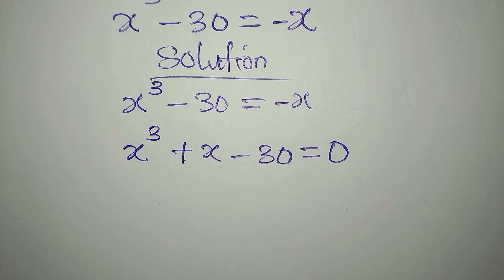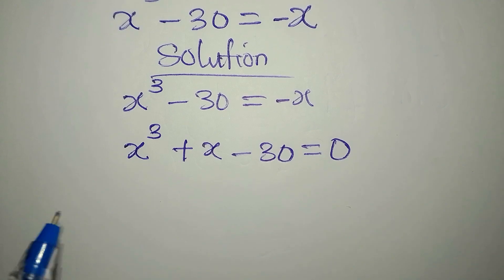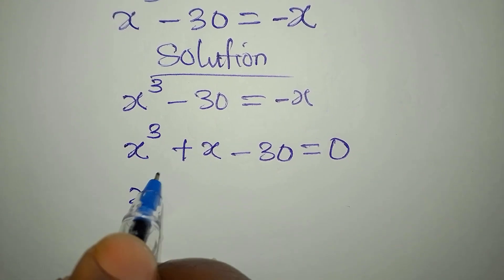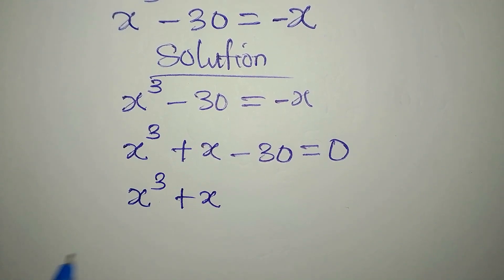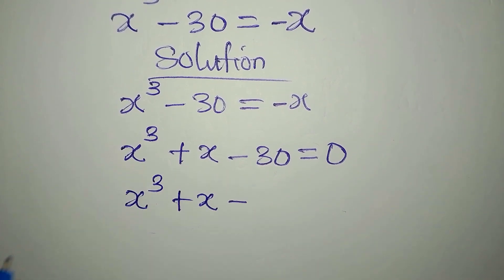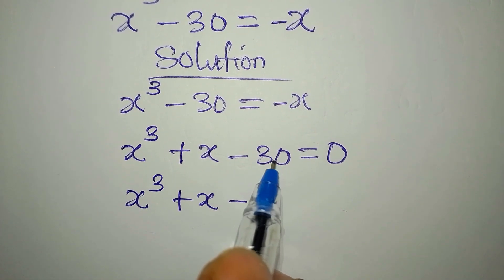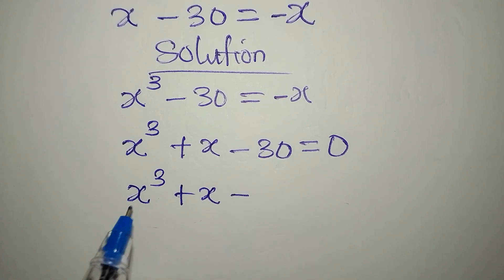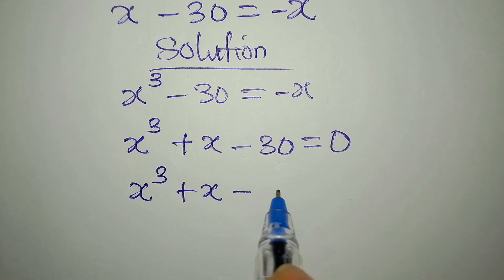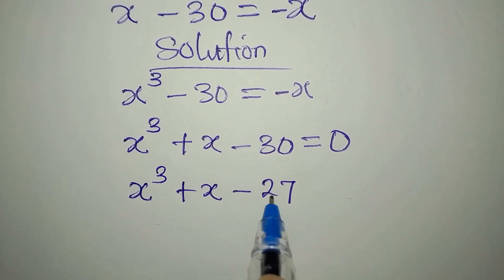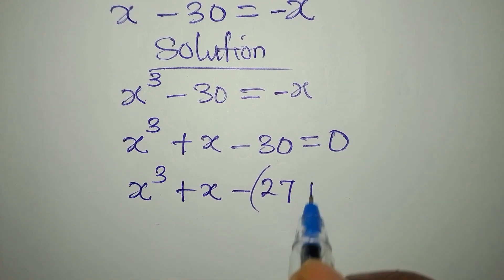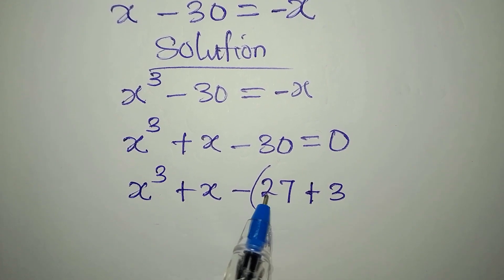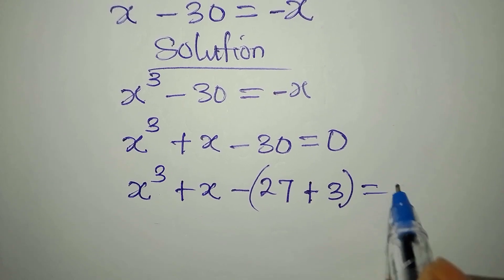The next step is to express 30 in a useful form. We have x to the power of 3 plus x. Since I want to express 30 in this form, I'm bringing out 27, because 27 is the only factor of 30 that can be written as a perfect cube. So 27 plus 3 gives us 30.